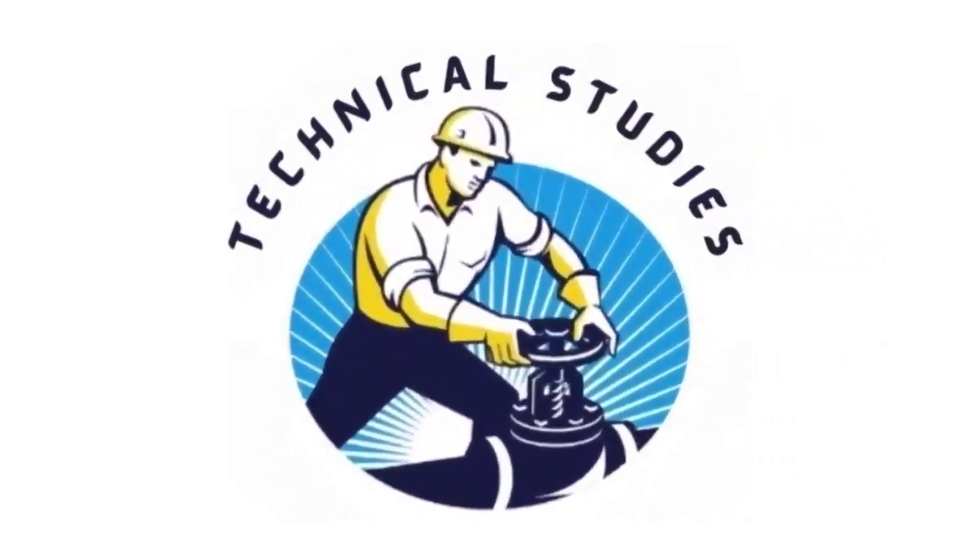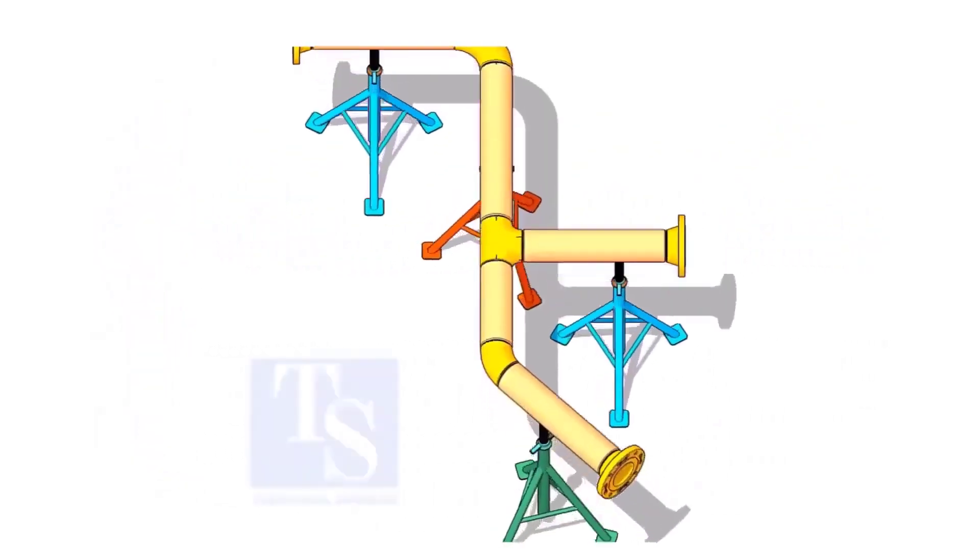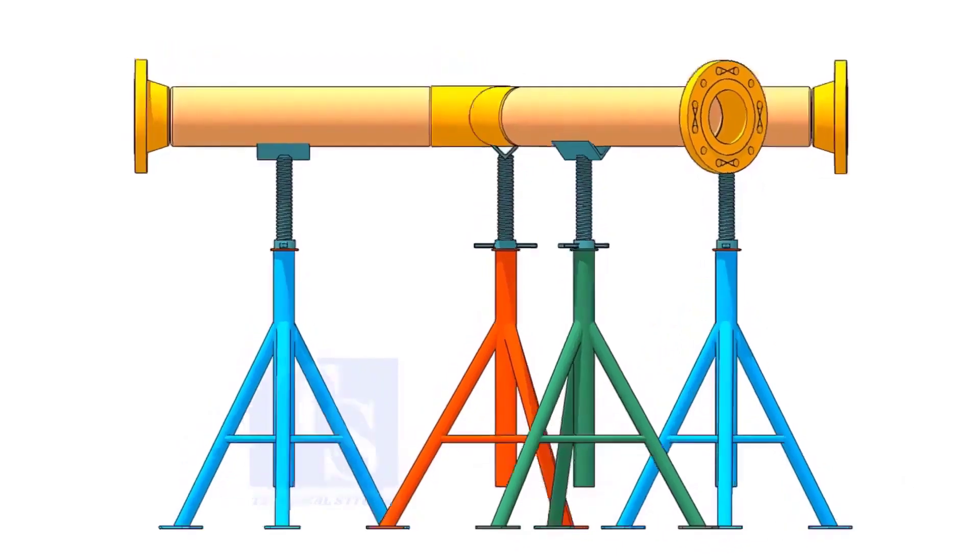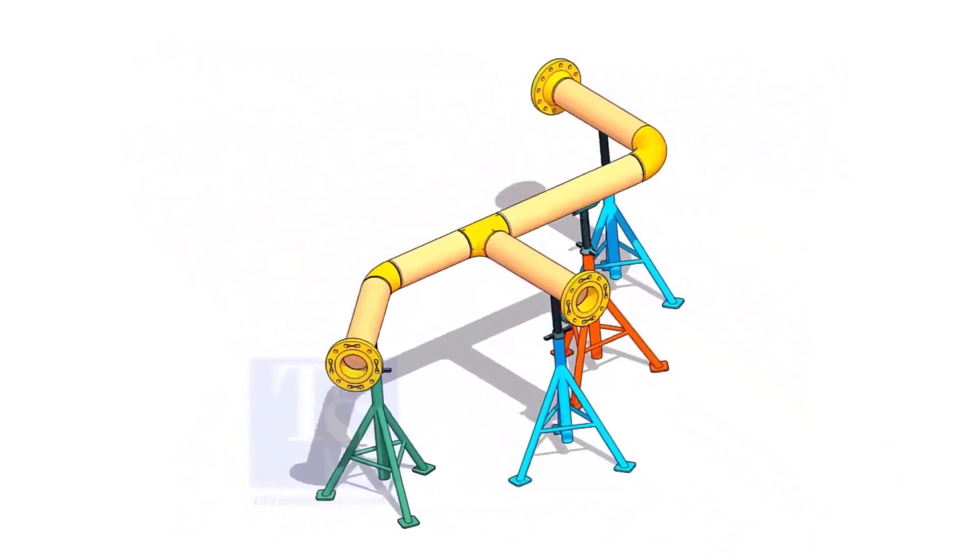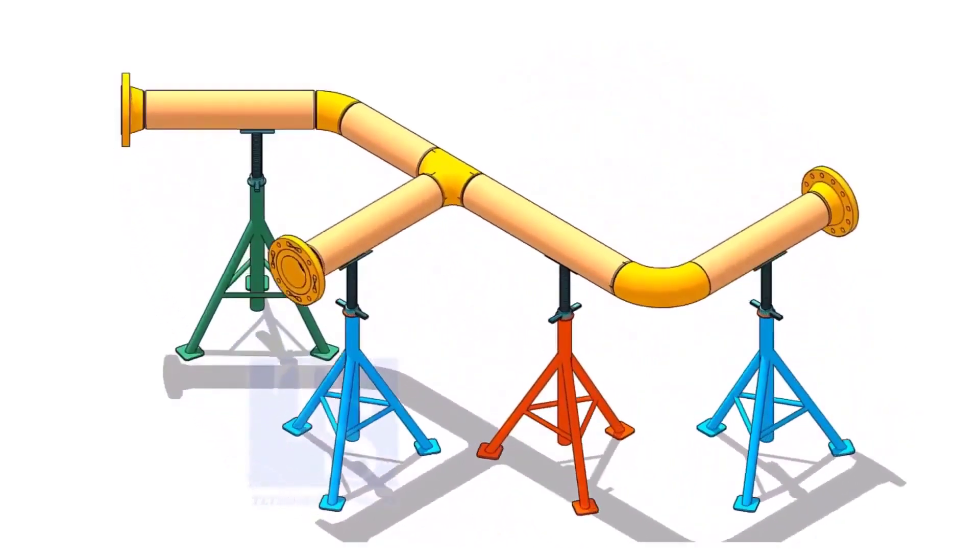Welcome to Technical Studies. If you get an isometric drawing for fabrication, what you will do first? I am sure you will check what is the size of the pipe, then the pipe schedule, flange class, etc.